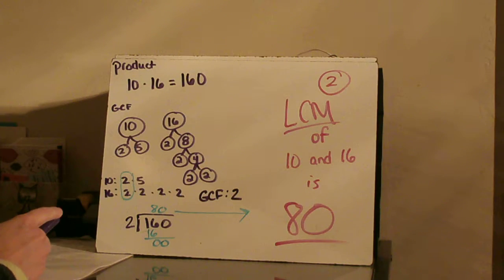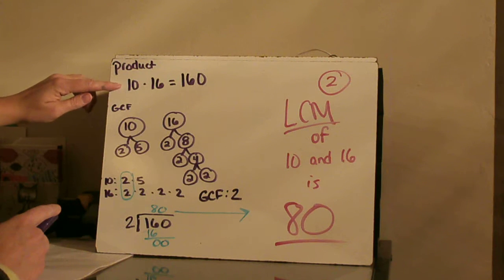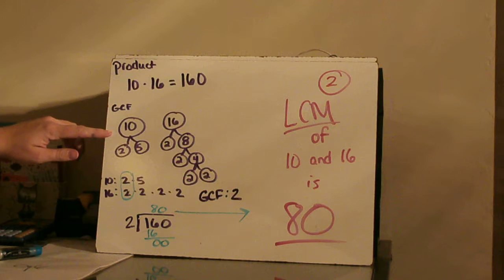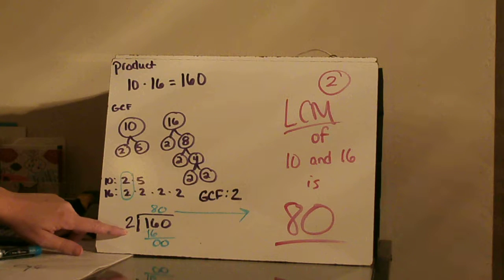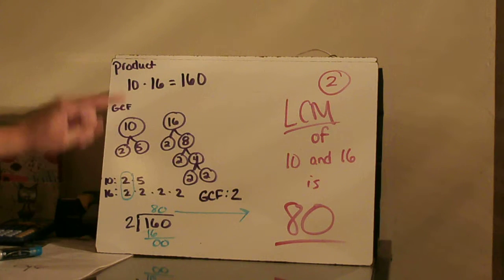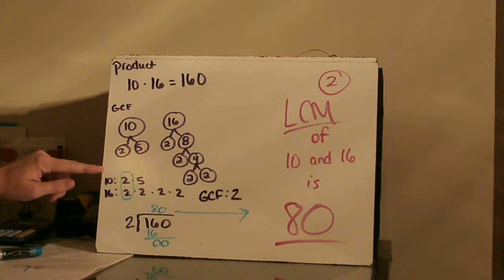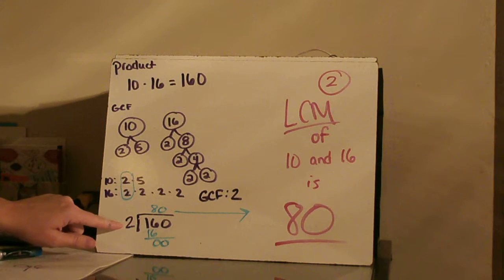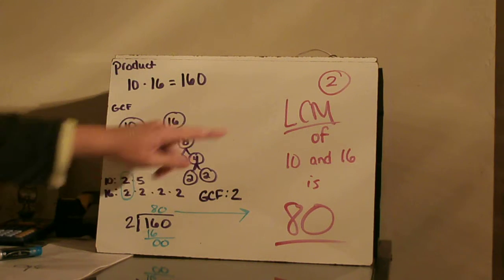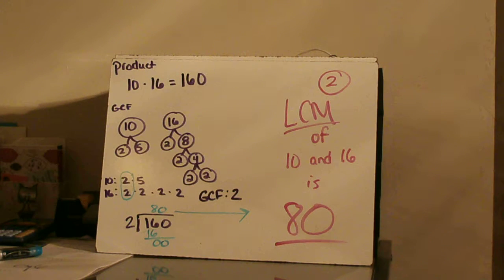Number two: the LCM of 10 and 16. I first found my product of 10 times 16 to be 160. I then found my greatest common factor using the factor tree for 10 and 16 and determined my GCF to be 2. Then in step three, I took my product and divided it by my greatest common factor: 160 divided by 2 is 80. So the least common multiple of 10 and 16 is 80.